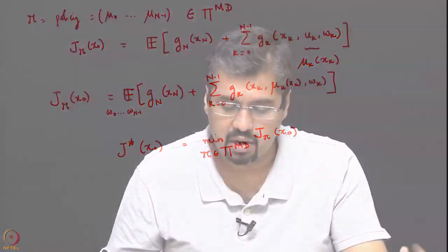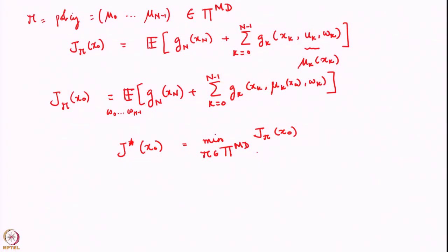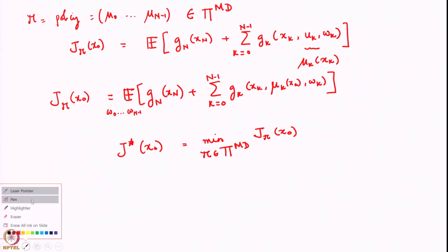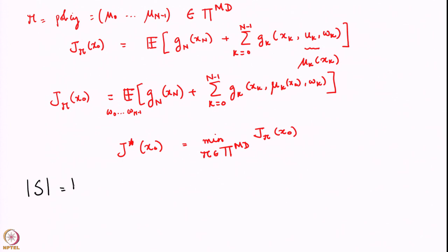Let us dwell a little bit on what the complexity of a problem like this is. This problem is asking me to search over all possible Markov deterministic policies. Let us see how large this set of Markov deterministic policies is and how vast this search is. To do this, let us say the state space has size b - some finite number - and the number of actions available at each time step has size small a.